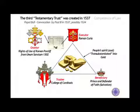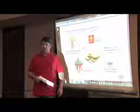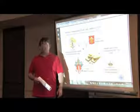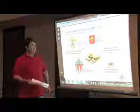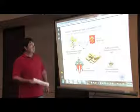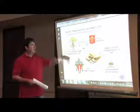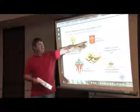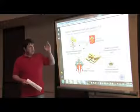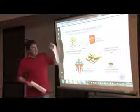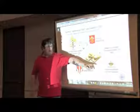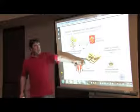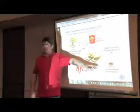And here we go, number three. This is where it starts to get really weird — this is where they start doing some real occult stuff on us. Well, it already started, but this gets even worse. The grantor here is the Pope again. Executives of the Roman Curia are the trustees, with the College of Cardinals. And over here the beneficiary is the prince and defender of faith.